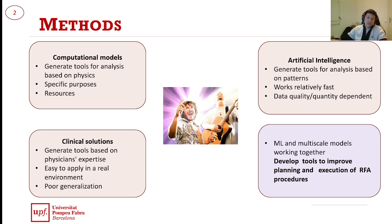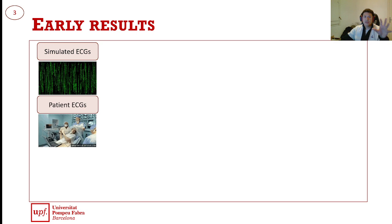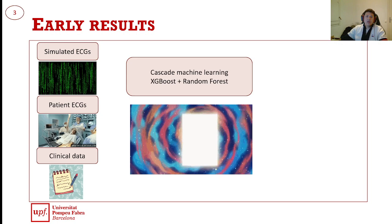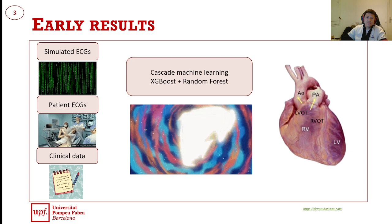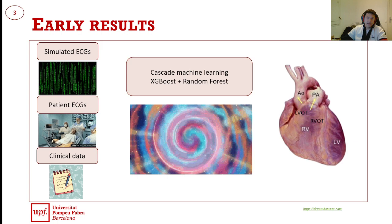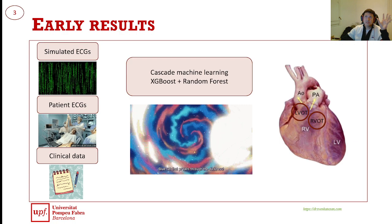So far, I've been able to use simulated electrocardiograms, patient or real ECGs, and clinical data, combining these sources in a cascade-like machine learning architecture using XGBoost and random forests to differentiate the site of origin of a ventricular tachycardia. Specifically, I'm differentiating if the site of origin for an idiopathic ventricular tachycardia is in the left or the right ventricular outflow tract.